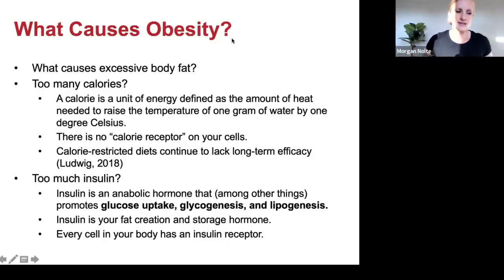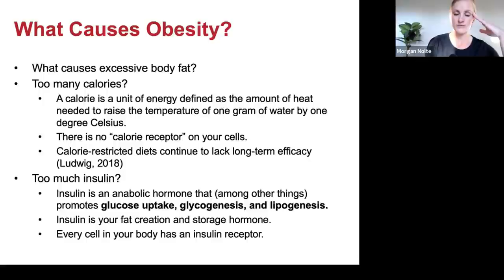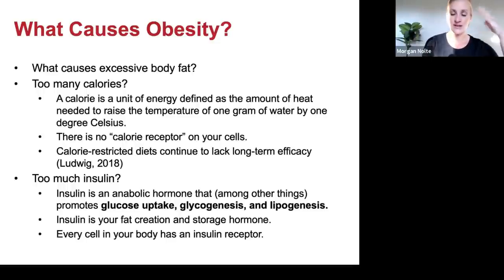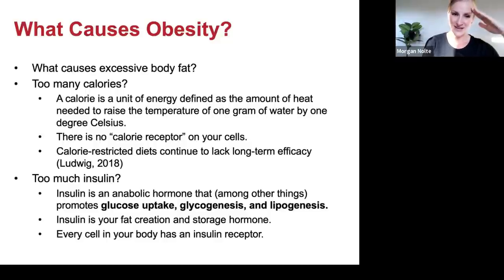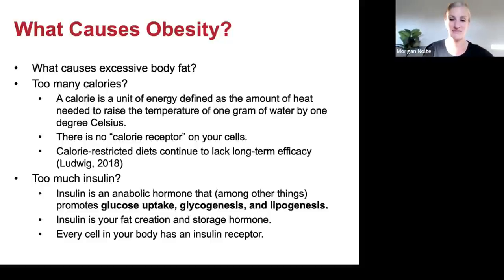We need to take a step back and think about what really causes obesity. Obesity is just an excessive amount of body fat. What causes that — is it too many calories or too much insulin? A calorie is simply a unit of energy defined as the amount of heat needed to raise the temperature of one gram of water by one degree Celsius. In all of my studies of anatomy and physiology, I have never seen a calorie receptor on a cell — it doesn't exist.